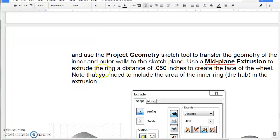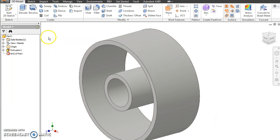So mid-plane is going to start on the face that you select. Go 25,000 one way and 25,000 the other way. That's how you get that little step that's in there.